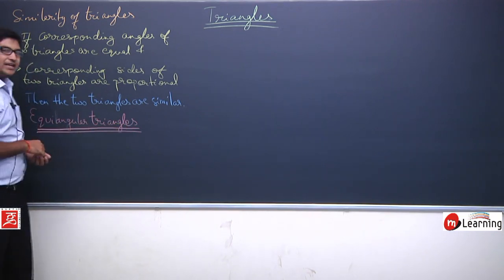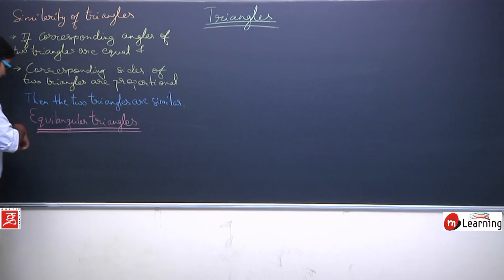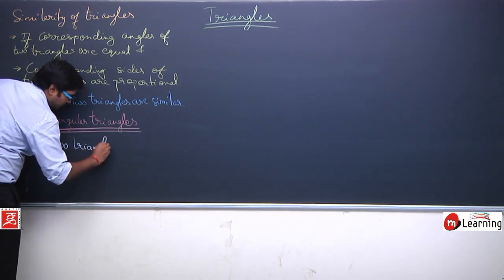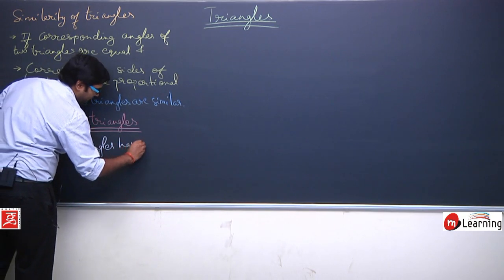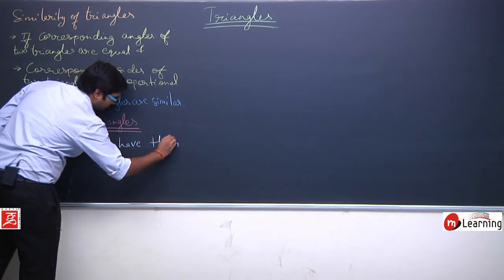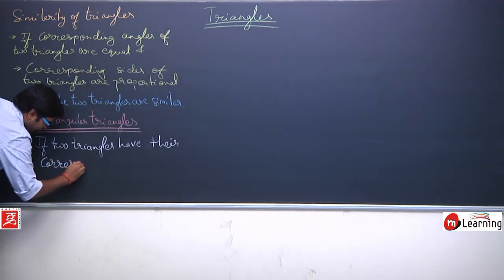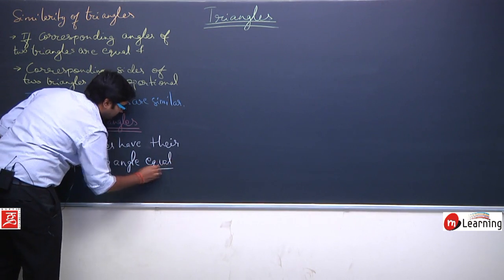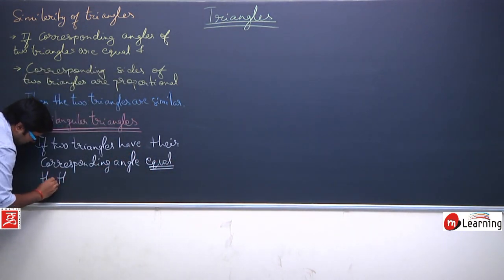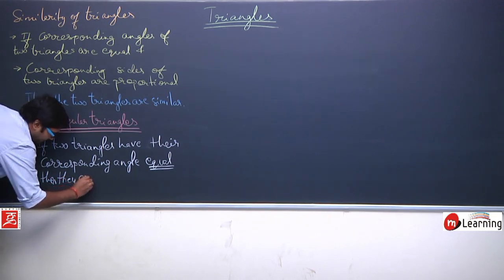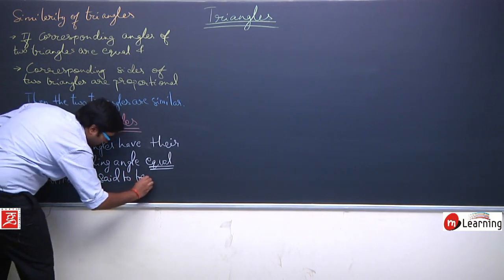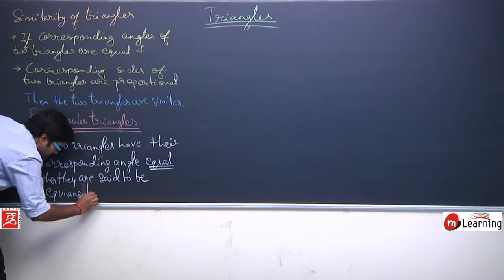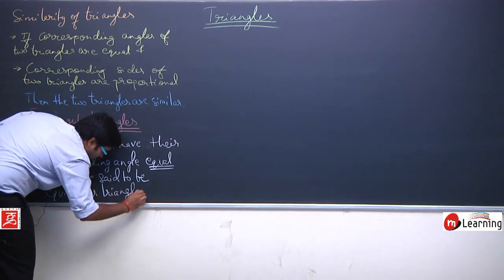What are equiangular triangles? He said that if two triangles have their corresponding angles equal, then they are said to be equiangular triangles.